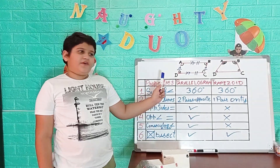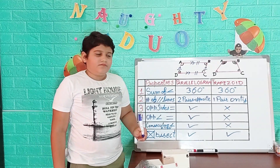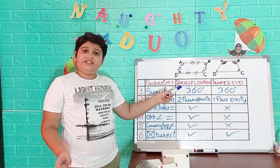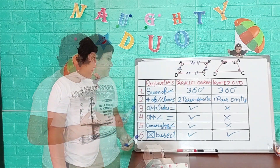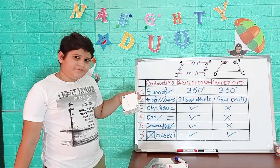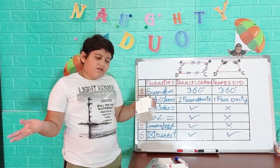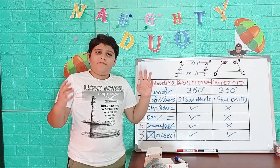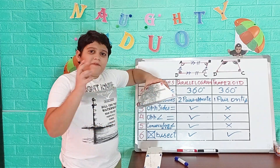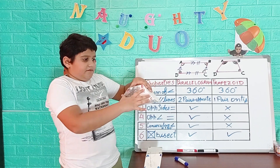Now let's look at the properties of a parallelogram and a trapezoid. Property one: sum of all angles. Angle A plus angle B plus angle C plus angle D equals 360 degrees — this is the same for both the parallelogram and the trapezoid. Property two: number of parallel lines. In a parallelogram, line AB is parallel to line CD, and line AC is parallel to line BD, giving two pairs of parallel lines.